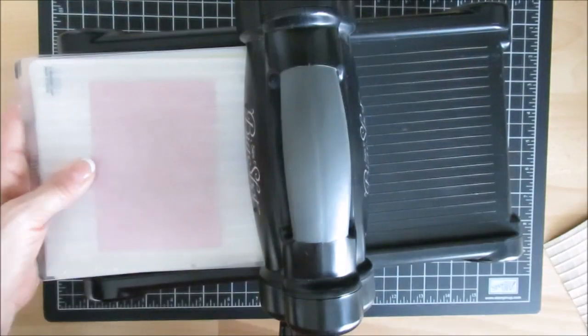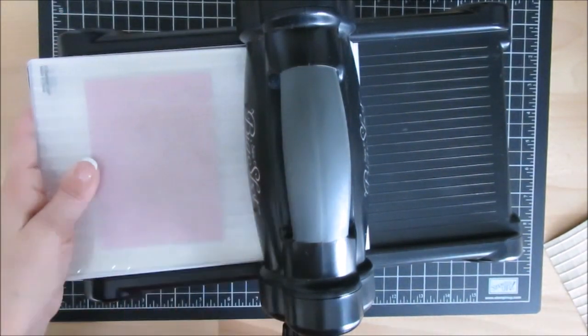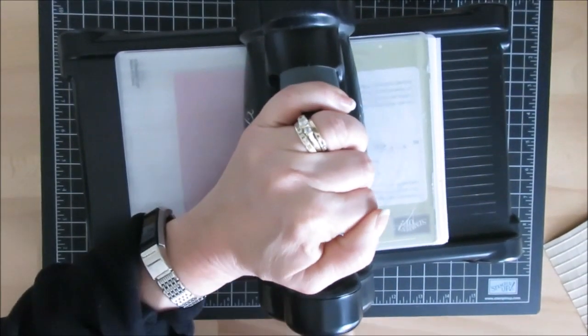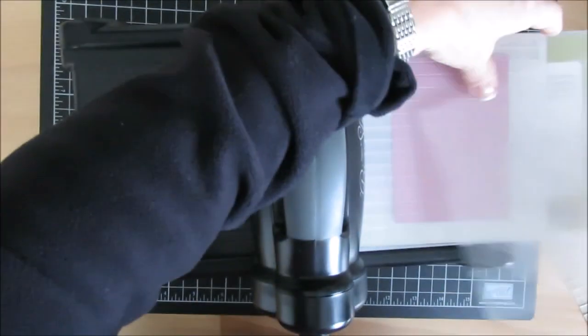Now we're going to roll this through. Make sure your embossing folder is straight so you don't break it on the side. Roll it through, bring it back.